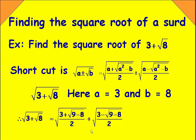Simplifying: 9 minus 8 is 1, so √1 = 1. For the first term: 3 plus 1 is 4, divided by 2 is 2, giving us √2. For the second term: 3 minus 1 is 2, divided by 2 is 1, giving us √1 = 1. Therefore, the square root of (3 + √8) is √2 + 1.